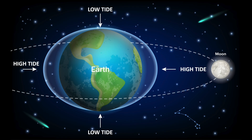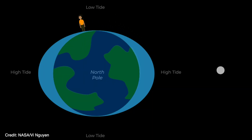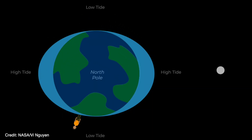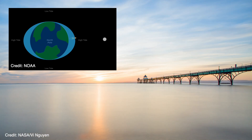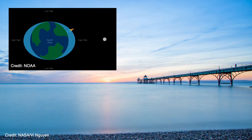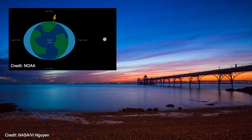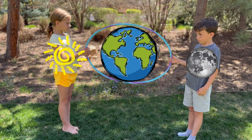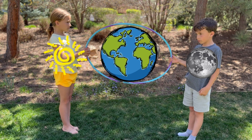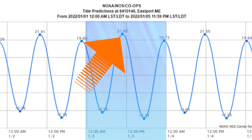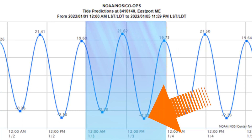These bulges are where you find high tides on Earth, and in between, the low tides. And once every 24 hours, every part of the Earth moves through those bulges of ocean water. If you're on the coast when you're in a bulge, it's high tide, and when you're in between bulges, it's low tide. And since there are two bulges opposite each other, most places get two high tides and two low tides about every 24 hours.